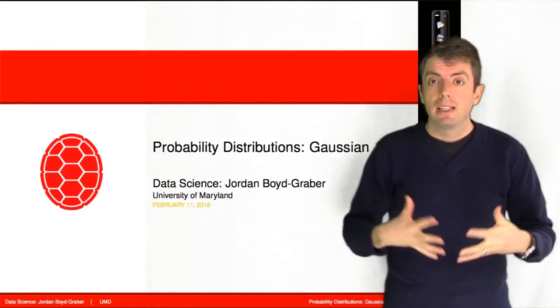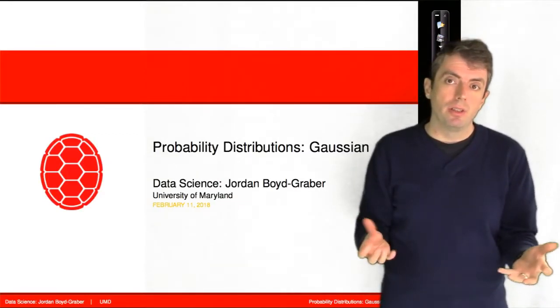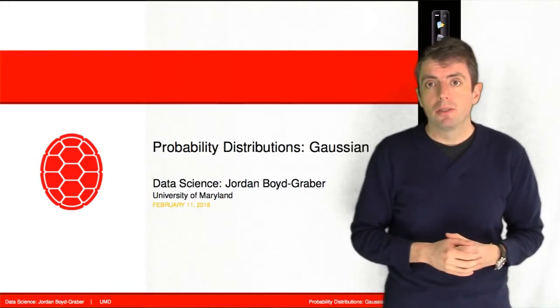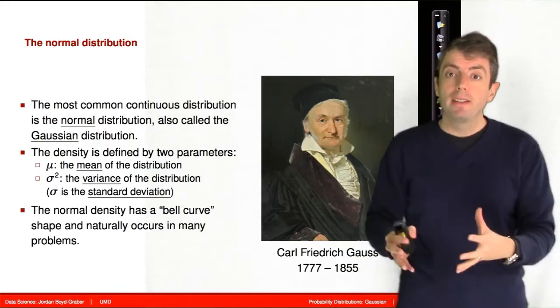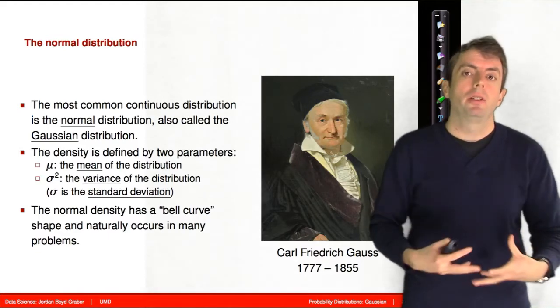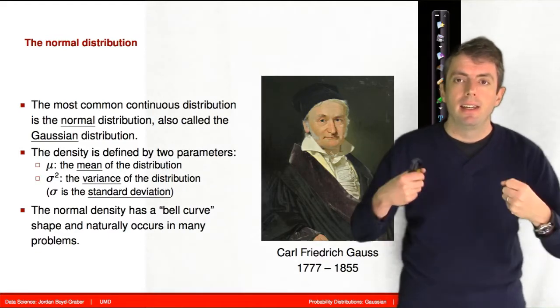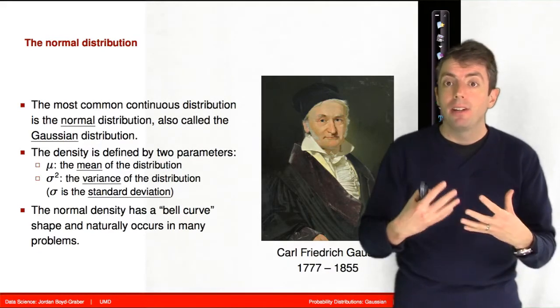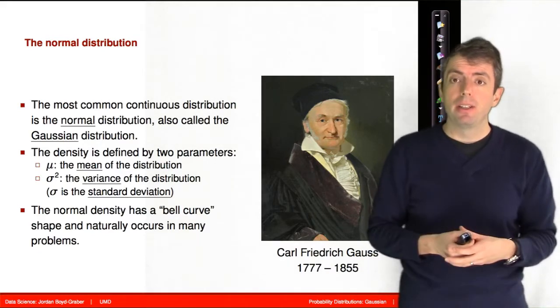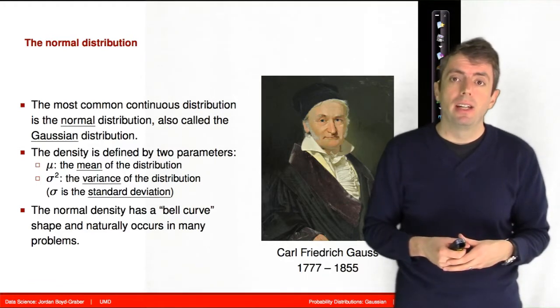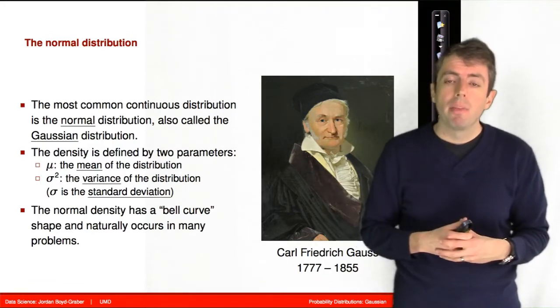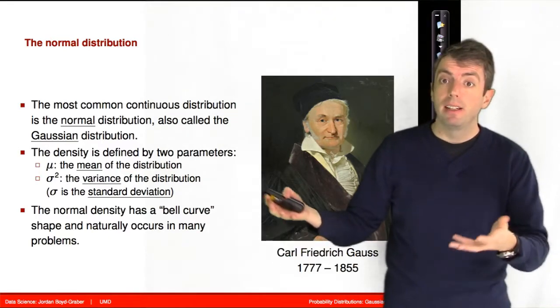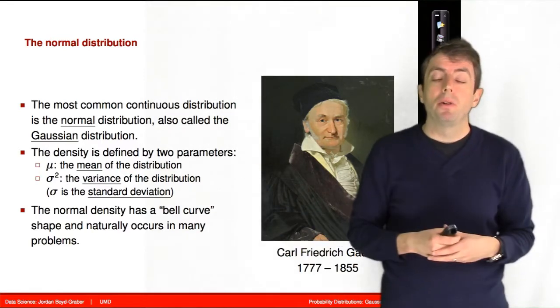So now that we've talked about continuous distributions in general, let's now start talking about specific continuous distributions. If there is one continuous distribution that you should know, it is the normal distribution. The normal distribution is often also called the Gaussian distribution after Carl Friedrich Gauss, who helped develop this as he developed techniques of regression that we will also talk about later.